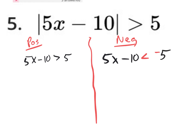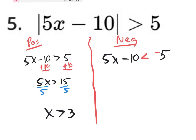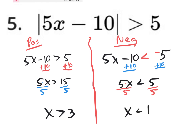Now we solve both. We get rid of the minus 10 by adding 10 to both sides, giving us 5x is greater than 15. Dividing both sides by 5, we get x is greater than 3. For the other one, adding 10 gives 5x is less than 5. Dividing by 5 gives x is less than 1. You do not flip the inequality because you're not dividing by a negative.